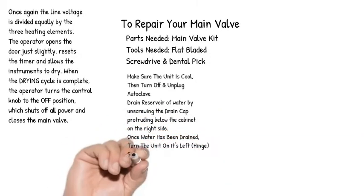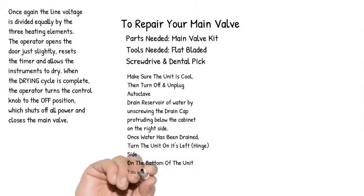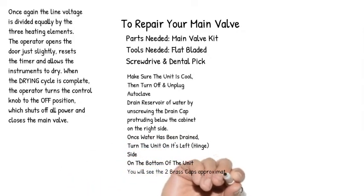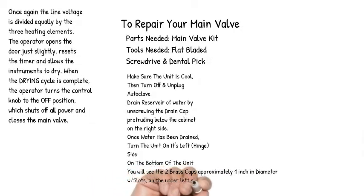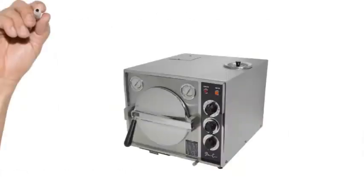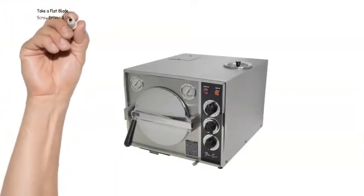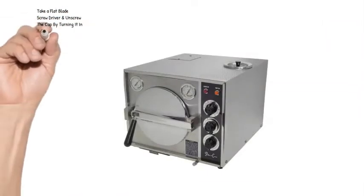turn the unit on its left hinge side. On the bottom of the unit you will see the two brass caps approximately one inch in diameter with slots, on the upper left side of the base. Take a flat blade screwdriver and unscrew the cap by turning it in a counterclockwise direction.